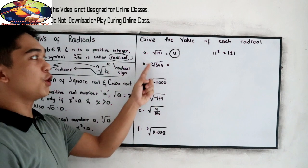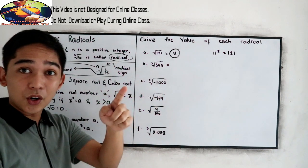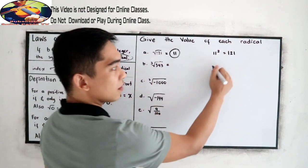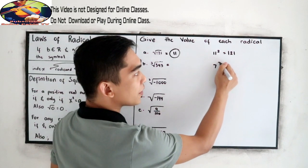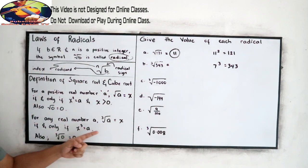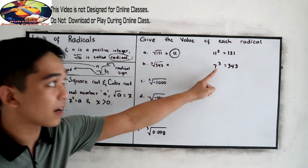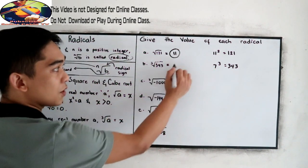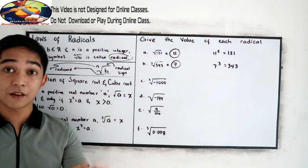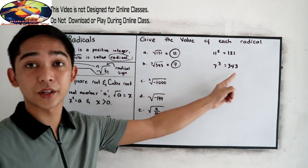Next, cube root of 343. Review your perfect cube numbers — 343 is 7 cubed. Following our definition, cube root of A is equal to X, so our X here is 7. The value of cube root of 343 is 7, since 7 times 7 is 49, and 49 times 7 is 343.